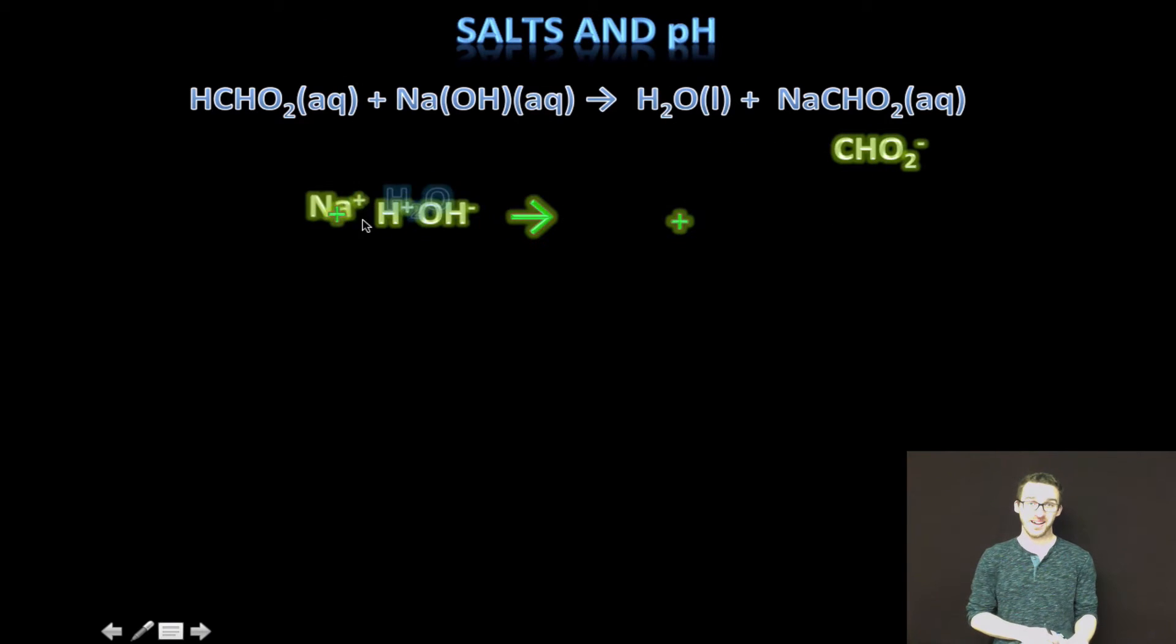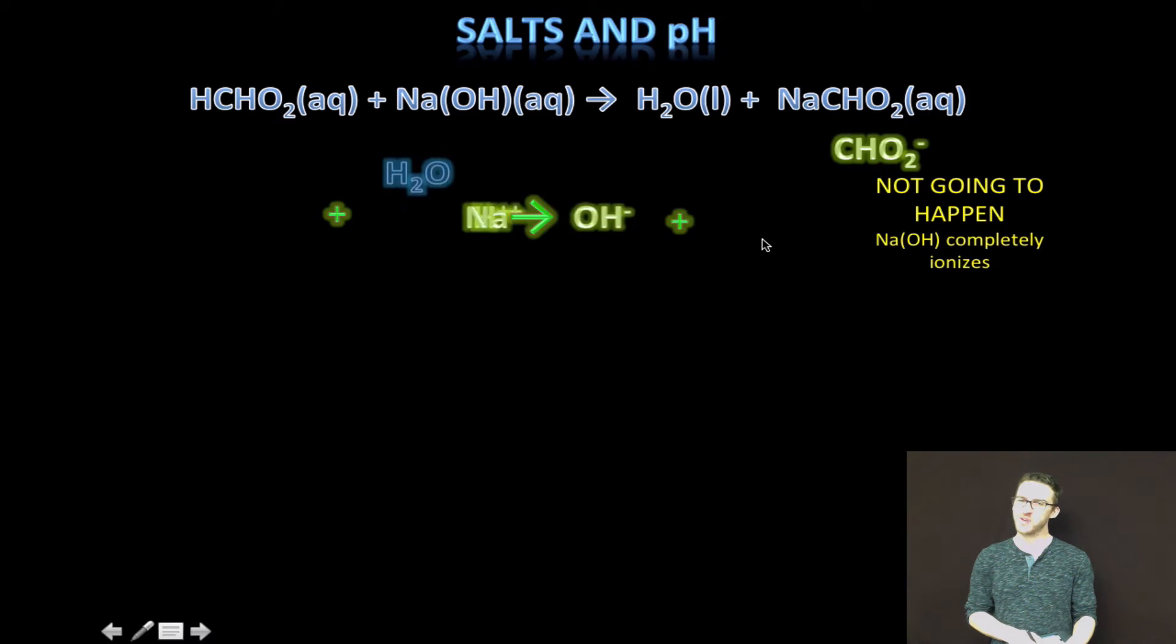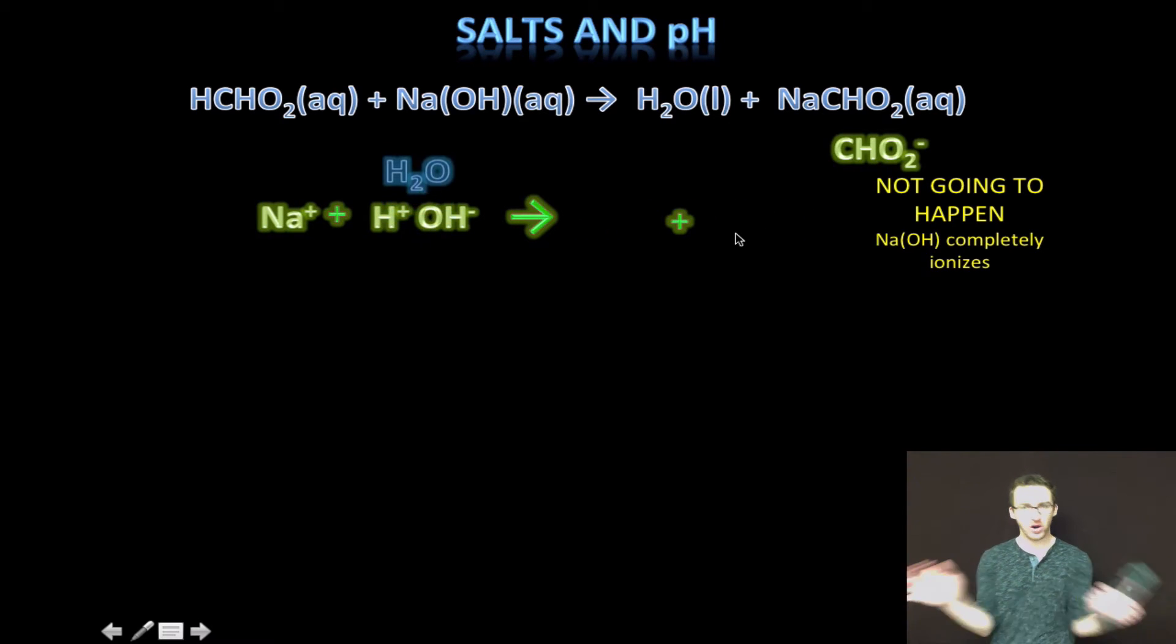Let's start with our cation, the sodium ion. Will the sodium ion hydrolyze or split water? If it does, it would form sodium hydroxide, which is a strong base. Remember, strong bases aren't going to form. They're not going to come together. They like to stay ionized, separated. This is not going to happen. The sodium ion is not going to hydrolyze water. And so it's not going to affect the pH of our salt solution.